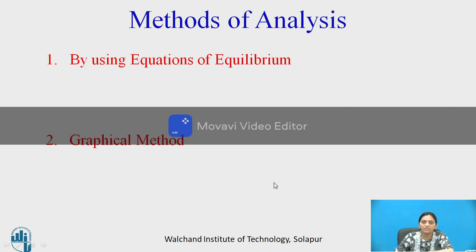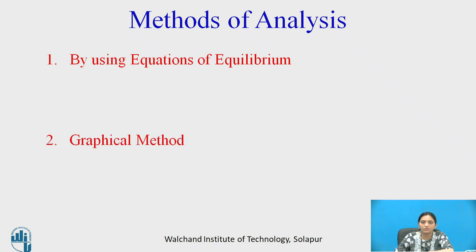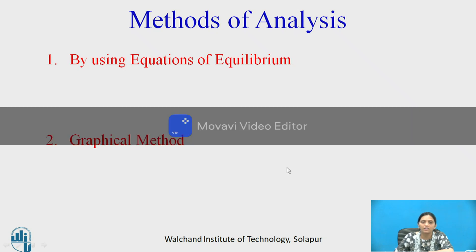There are two methods for the analysis. One is by using equations of equilibrium that is called analytical method, and second is graphical method. The equations of equilibrium for the concurrent force system are summation of horizontal forces in x direction are zero and summation of vertical forces in y direction are zero.